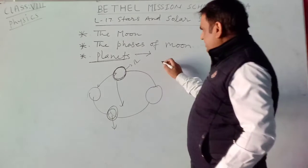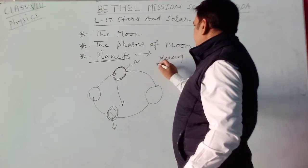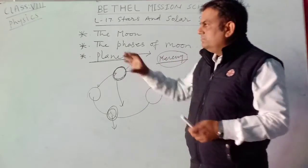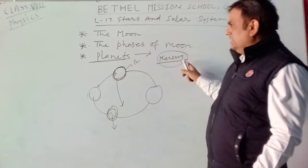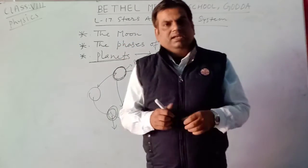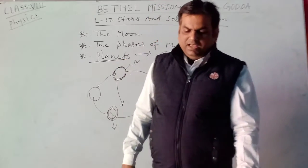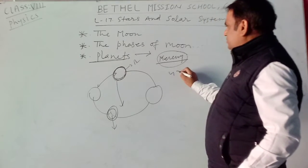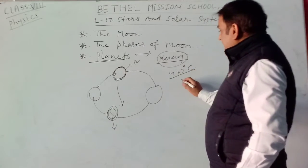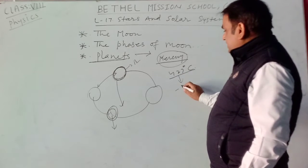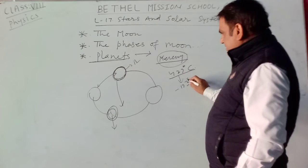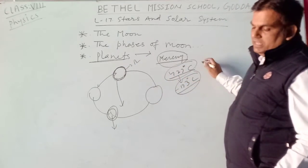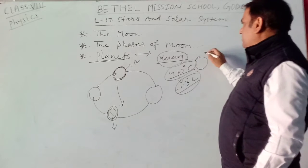The first planet is Mercury. The other name of Mercury is Buddha. Mercury is the first planet from the sun. During the day, the temperature of Mercury is about 427 degrees Celsius, and the night is very cold at minus 173 degrees Celsius. It completes its revolution around the sun in about 88 days.